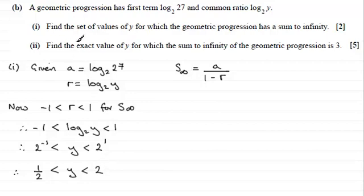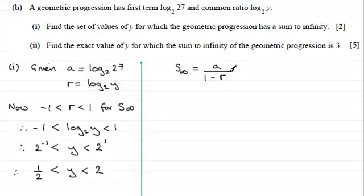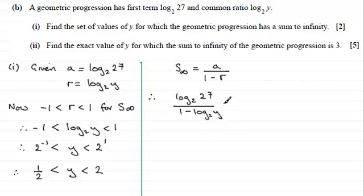For the second part, find the exact value of y for which the sum to infinity of the geometric progression is 3. The sum to infinity is the first term a divided by 1 minus the common ratio. Substituting our values, we get log base 2 of 27 divided by 1 minus log base 2 of y, and this equals 3.